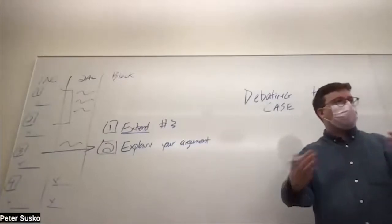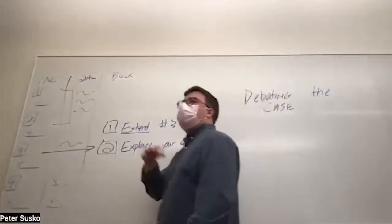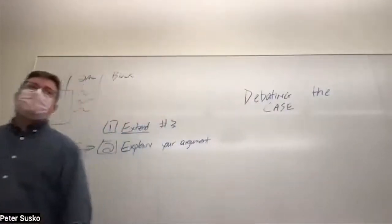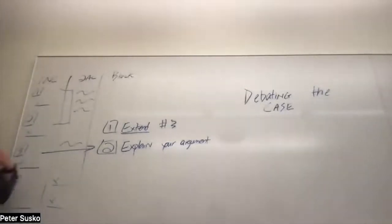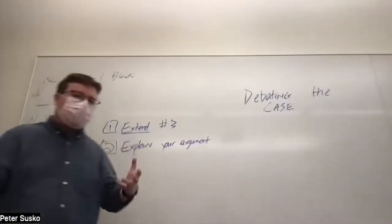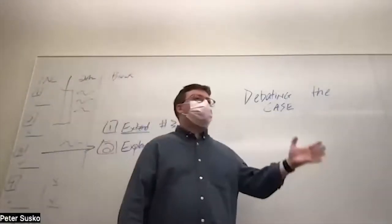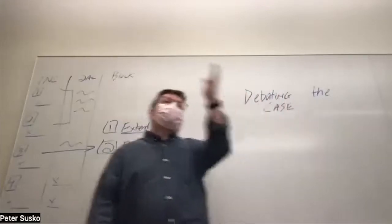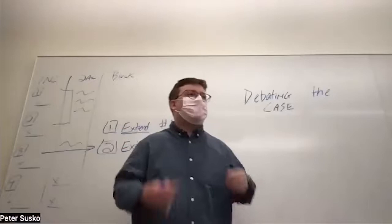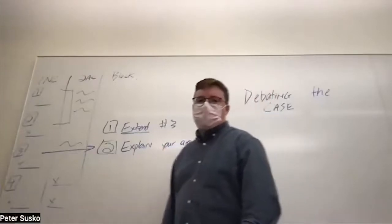It allows you to provide context and explanation to your argument that typically a judge would do at the end of the round by reading the evidence itself. What's the context of it? Does it provide some empirical analysis? Is it timely? Does it post-date what happened in Ukraine? Does it post-date what happened with the strategic concept? Making these delineations allows your evidence to be stronger than your opponent's.